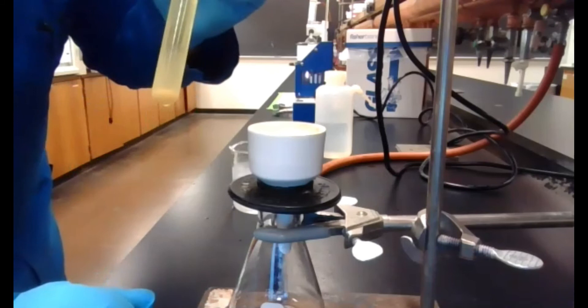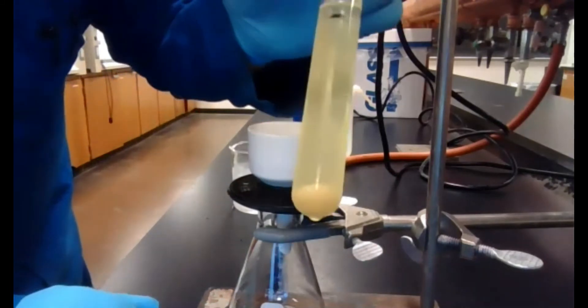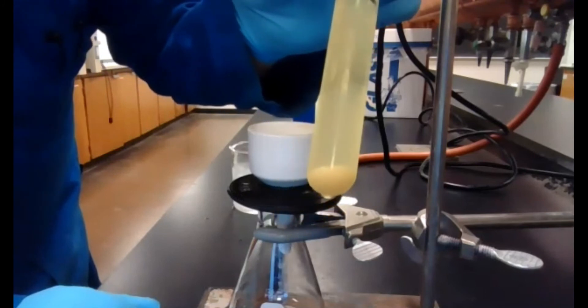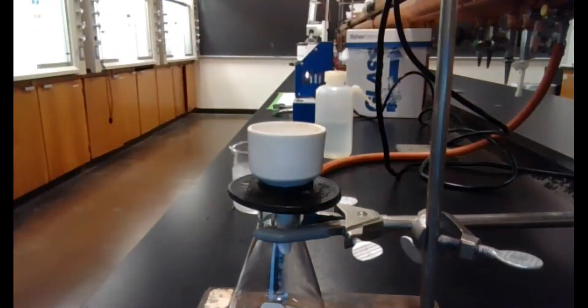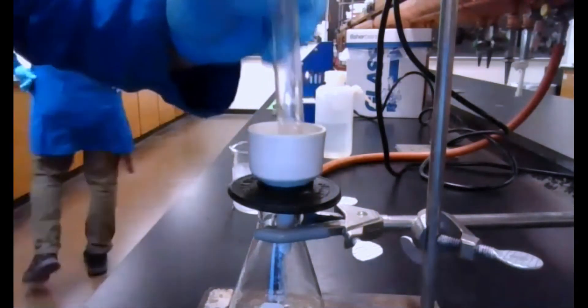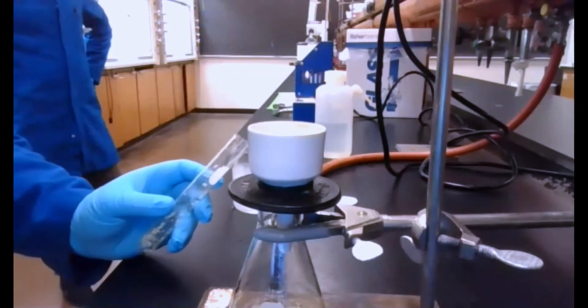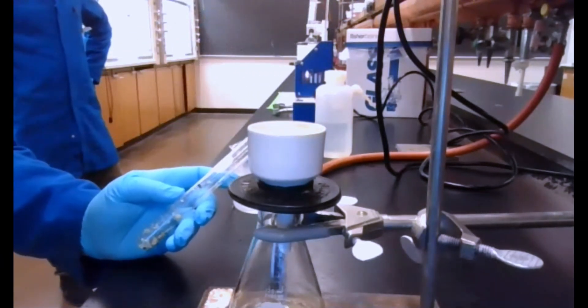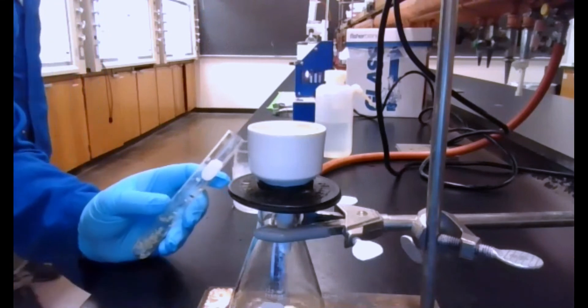All right, we've gone ahead and cooled our recrystallization down. You can see more has kind of crystallized out and fallen to the bottom. So now we're going to go ahead and filter that, trying to get out as much as possible. Once this is dry, we're going to get a melt temp and an IR and a UV-VIS and we'll post it on canvas.